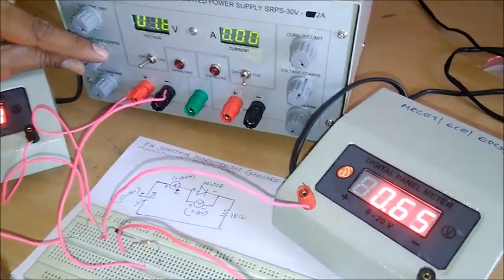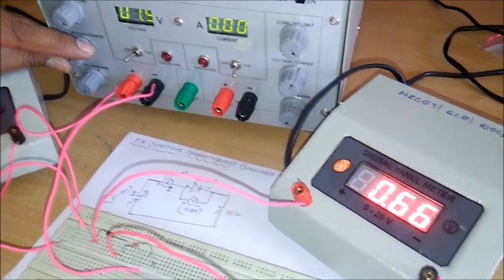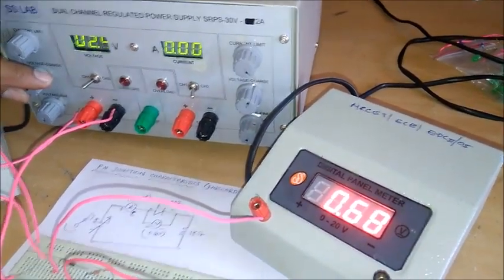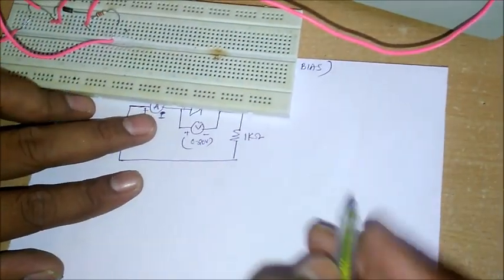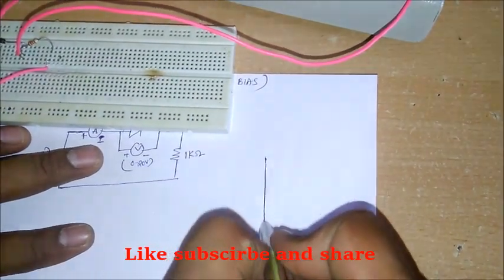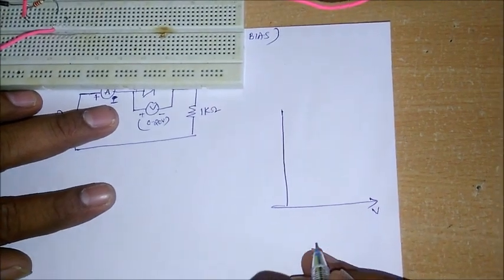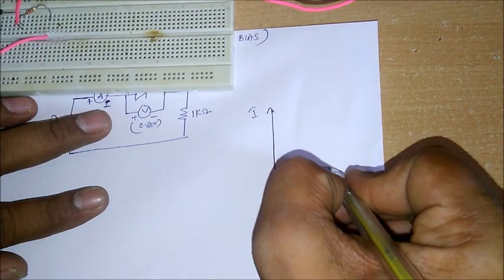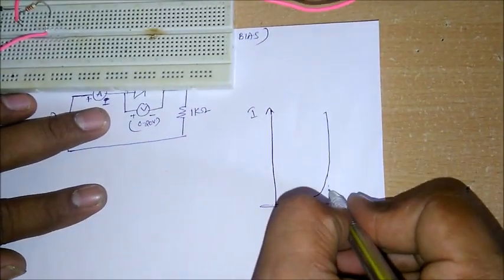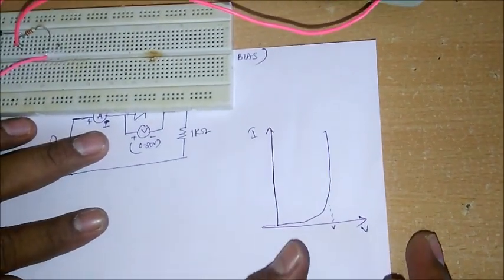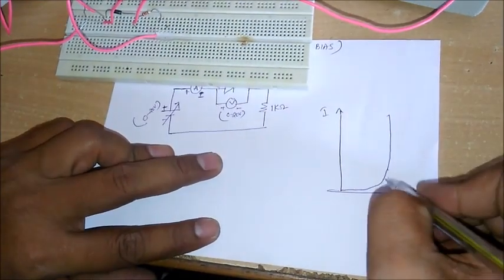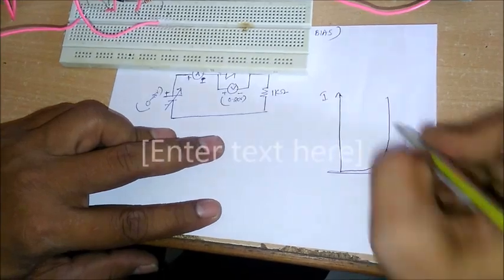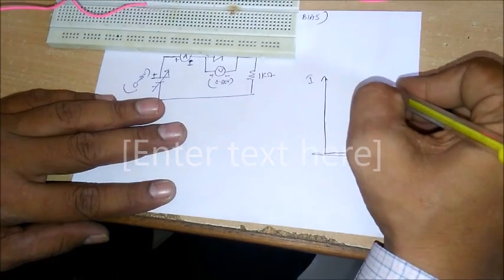In steps of 0.2 volts we are taking the readings. We can see that the current increases exponentially while the voltage becomes constant at a particular point. After taking the readings, if you plot the graph with V on the x-axis and I on the y-axis, the characteristics increase exponentially. The point at which the voltage becomes constant is called the cutoff voltage, and beyond this point the current increases exponentially.